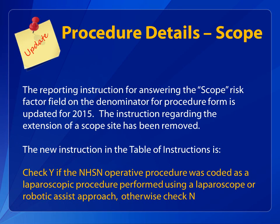In 2015, the reporting instruction for answering the scope risk factor field on the denominator for procedure form has been updated. NHSN had stated that if a trocar site was extended, the answer to the scope question should be scope equals No. This reporting instruction has been removed. The new reporting instruction is: check Yes if an NHSN operative procedure is coded as a laparoscopic procedure performed using a laparoscope or robotic assist; otherwise, check No.